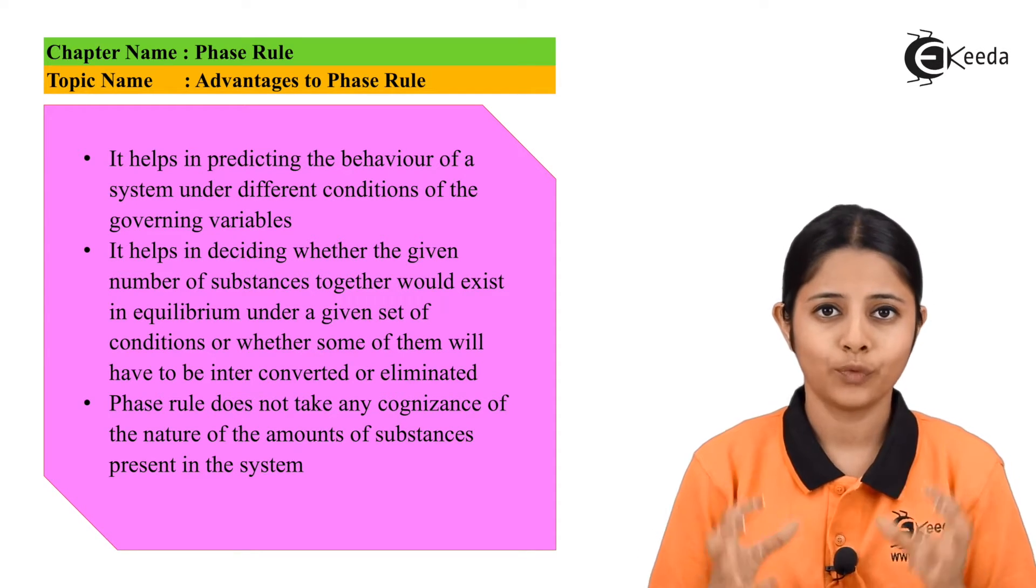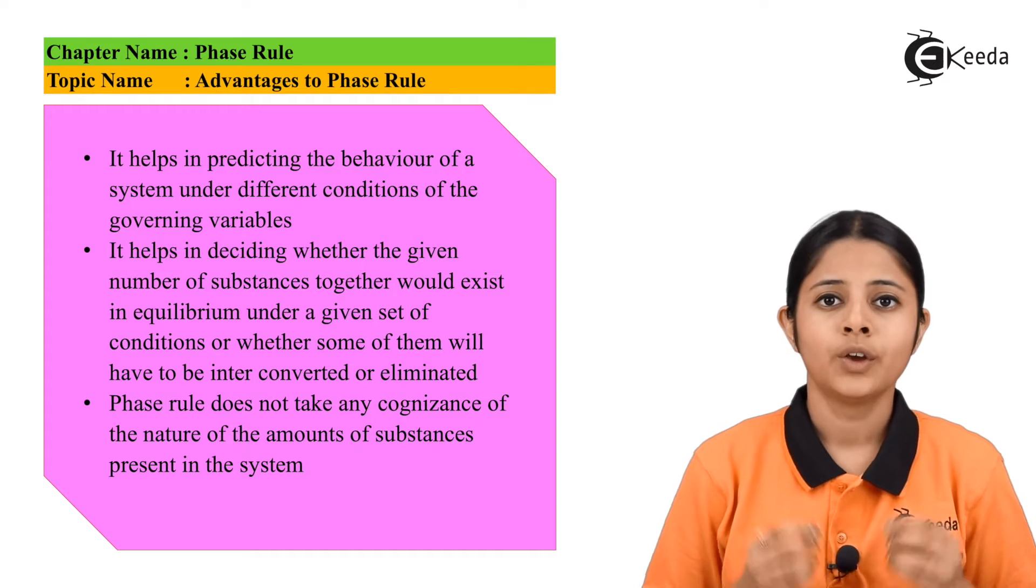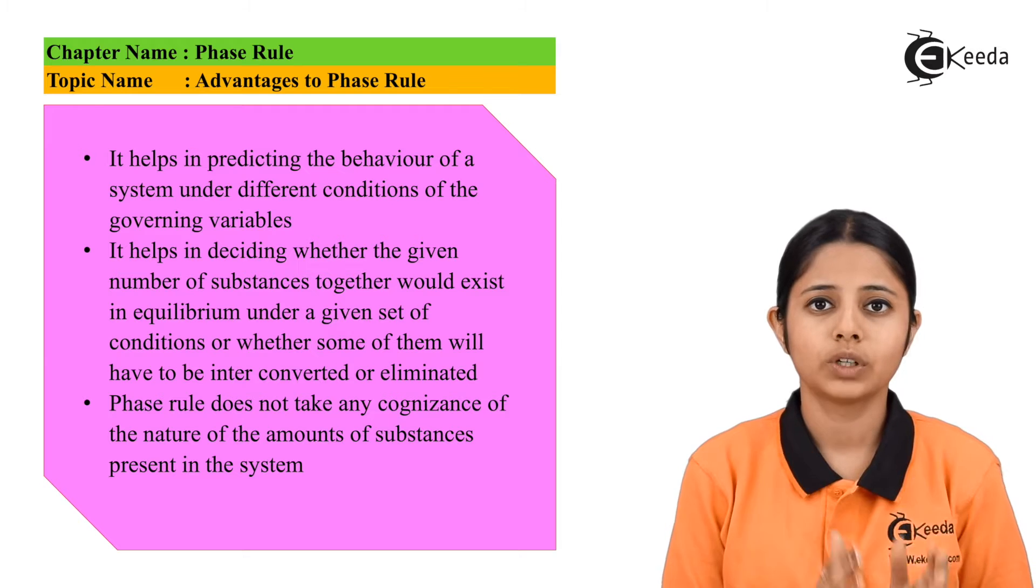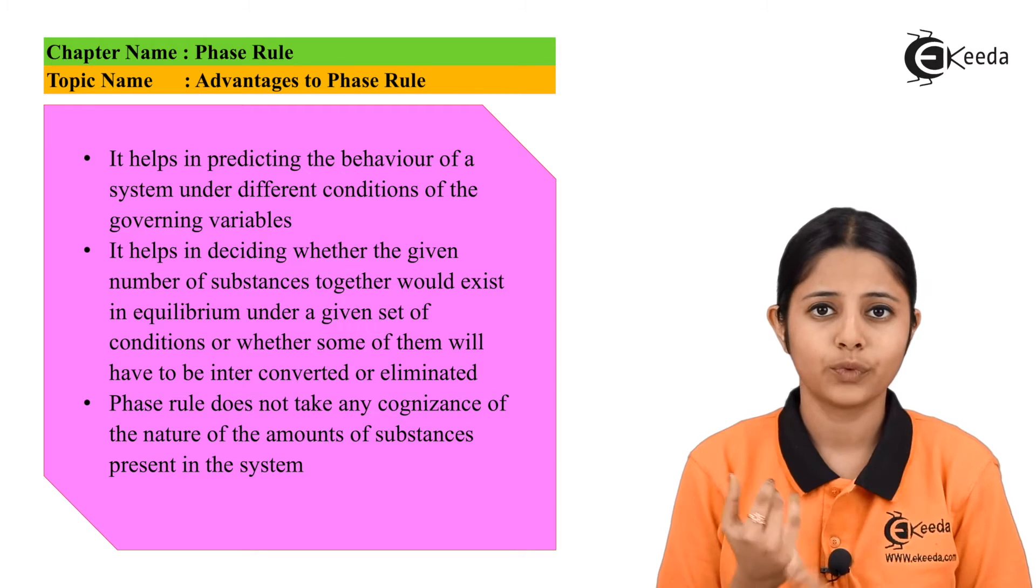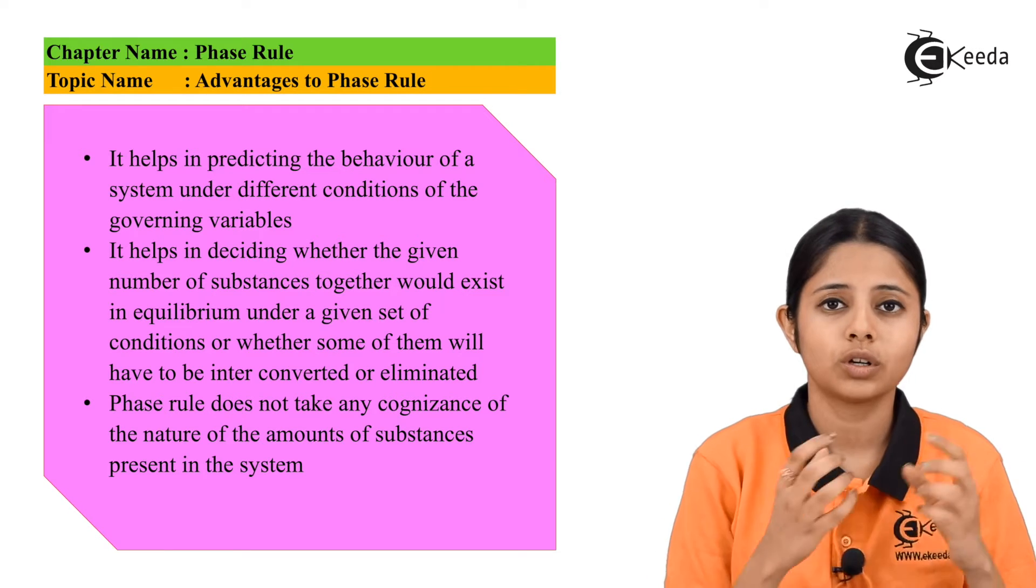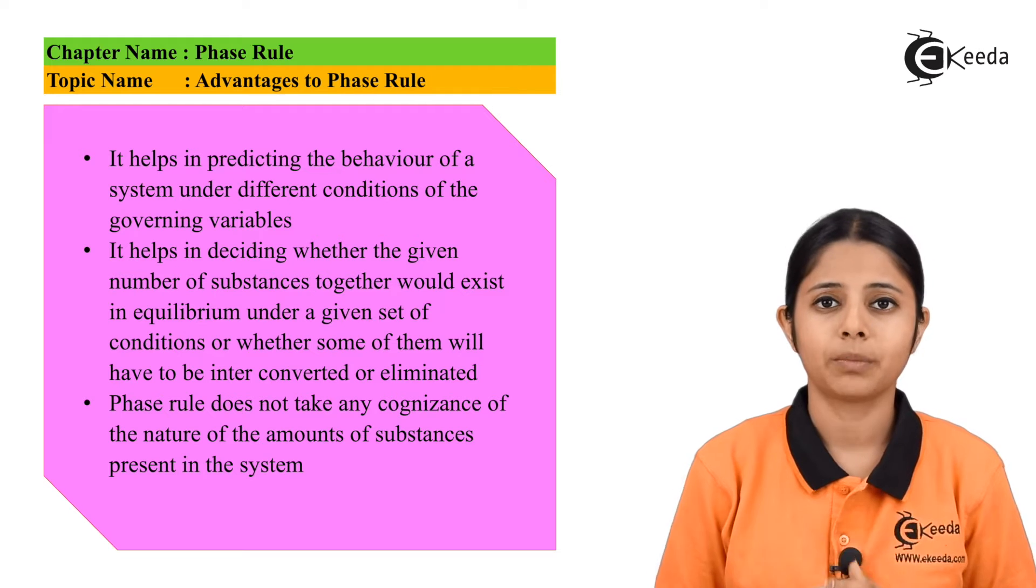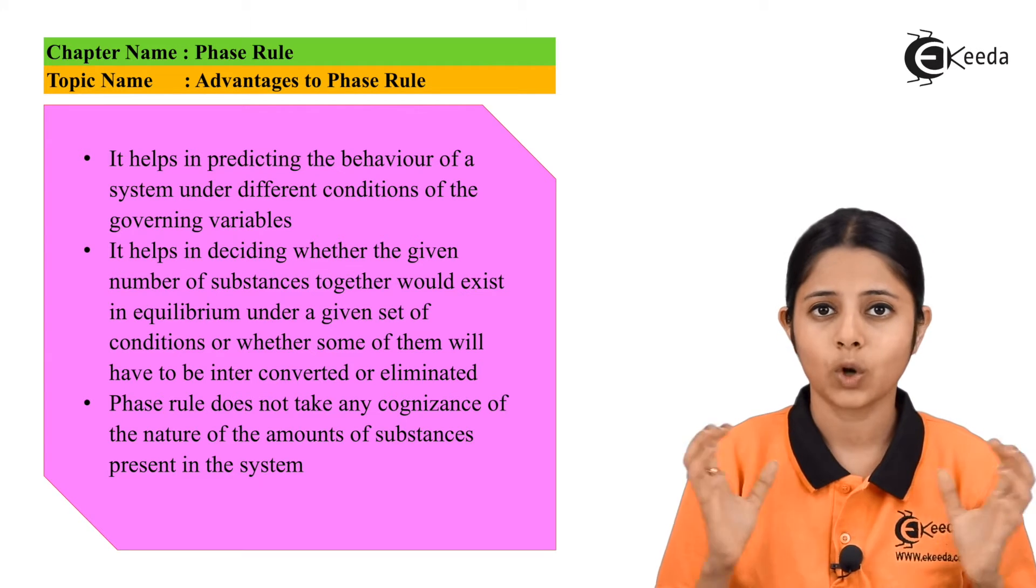And the seventh or the last advantage of it is that phase rule does not work with the nature of the material. Whenever we are talking about the phase rule, we only talk about equilibrium. We talk about phases, degrees of freedoms and components. We do not talk about the physical properties of the components or the chemical properties of the components. And that is the reason why phase rule can be applied to almost all components and all systems.